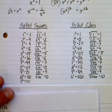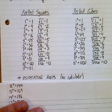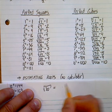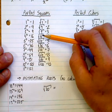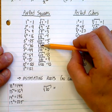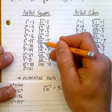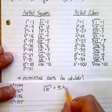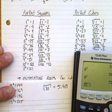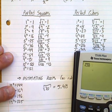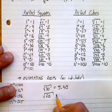Let's look at estimating roots with no calculator. If I wanted you to estimate the square root of 30, you look here and say okay, 30 is between 25 and 36, so it's got to be between 5 and 6. It's closer to 25, so I'd say 5.48. Let me check: square root of 30 equals 5.48. Look at that!